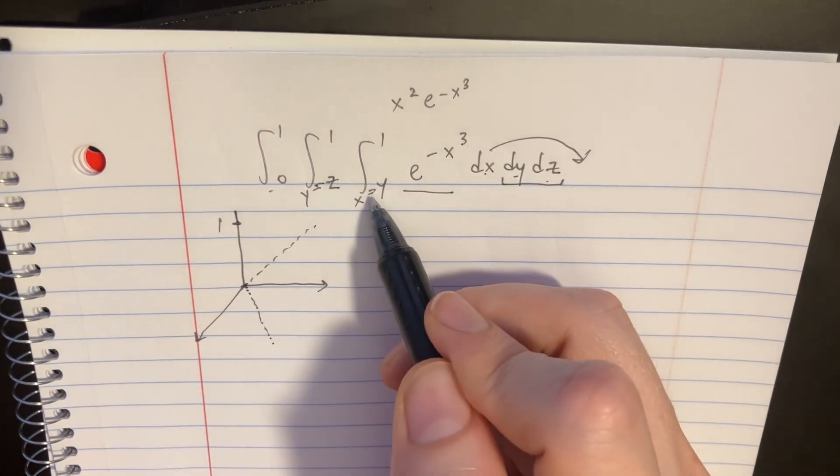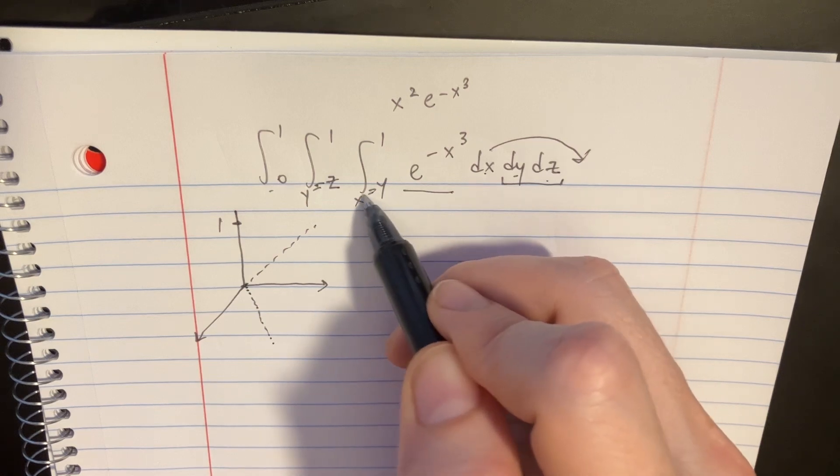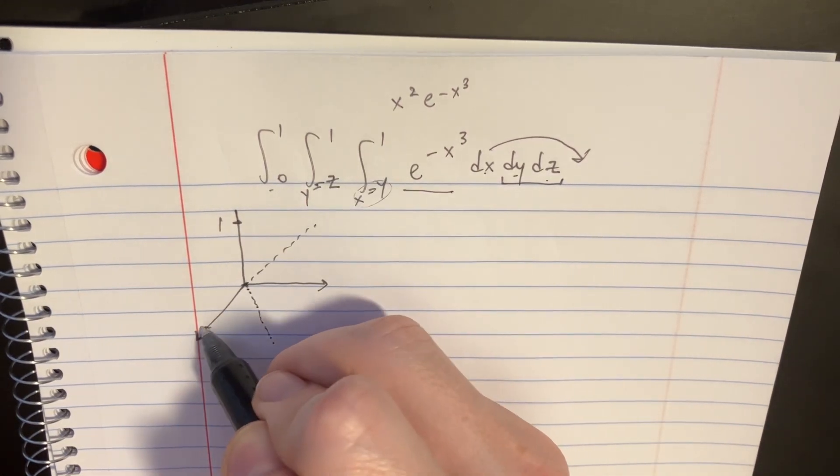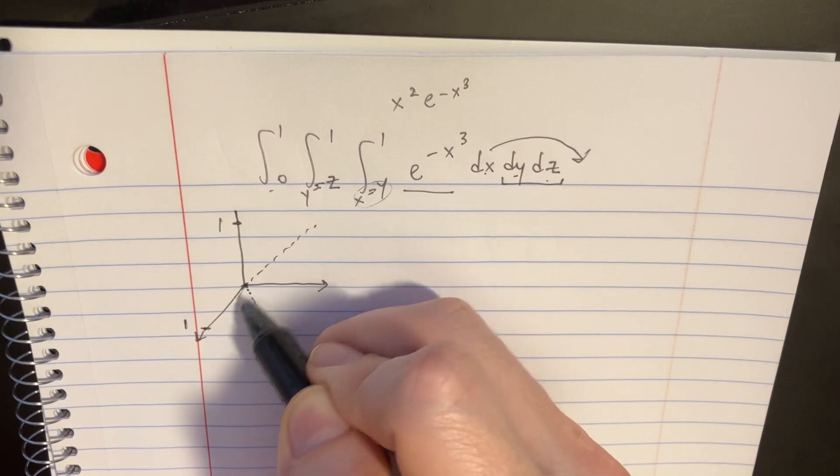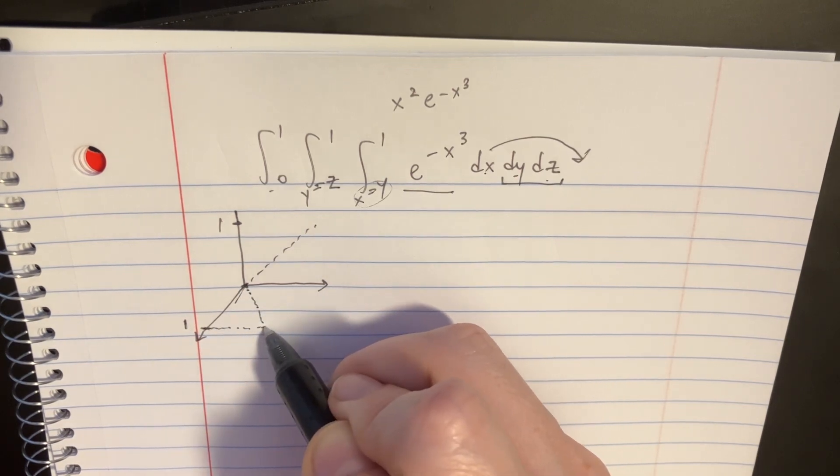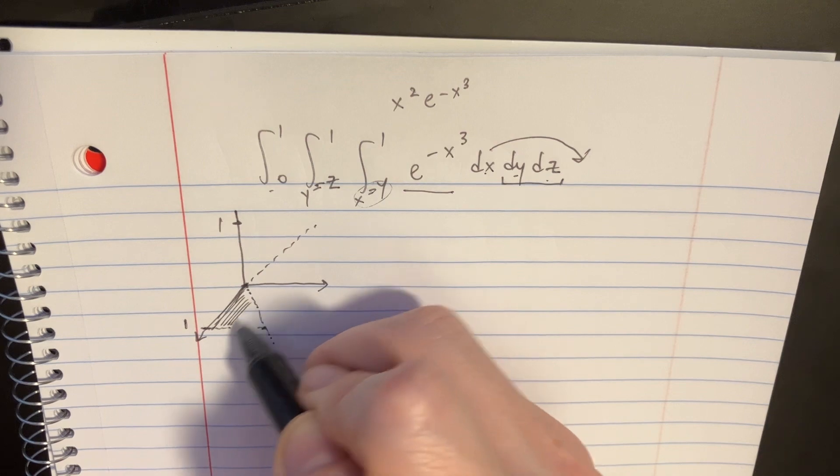In the x situation, we have from the line to one. So that would be, here's the one. From the line to one, it could intersect right around here. It's going to be this portion.